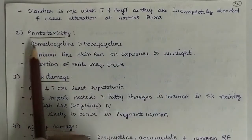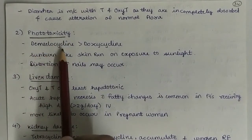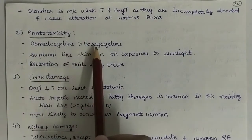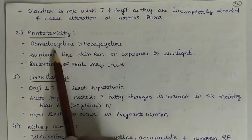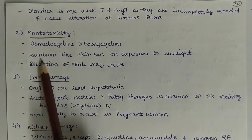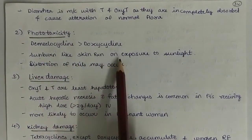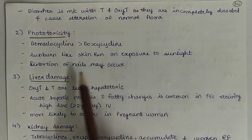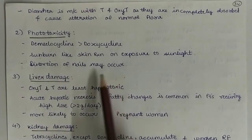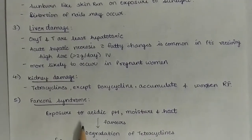Second, phototoxicity. Demeclocycline phototoxicity is more than doxycycline, but both show phototoxicity. Sunburn-like skin reaction on exposure to sunlight occurs. Distortion of the nails may occur. Pigmentation is also seen sometimes.